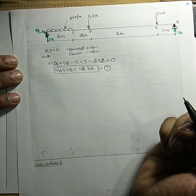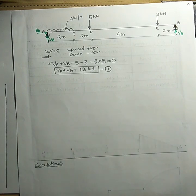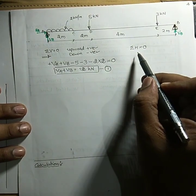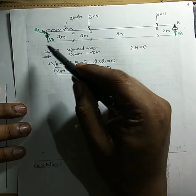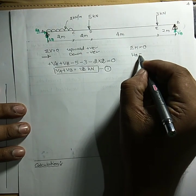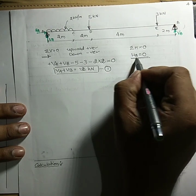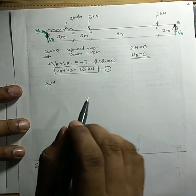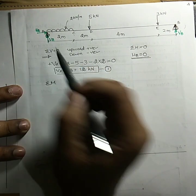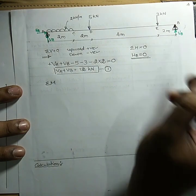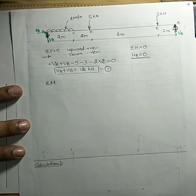For the second equilibrium condition — summation of horizontal forces equal to zero — there is only one horizontal force, HA. So HA = 0. For the third condition, summation of moments at any point equal to zero. It is best to calculate at point A so that VA and HA are eliminated automatically.